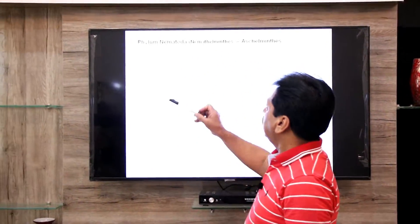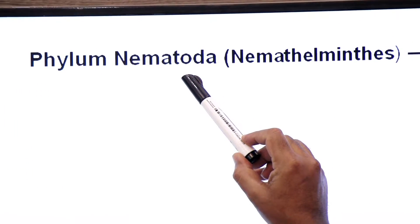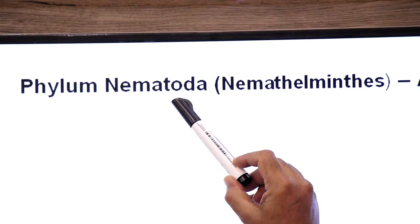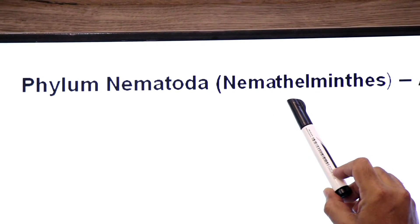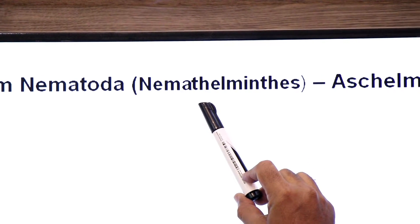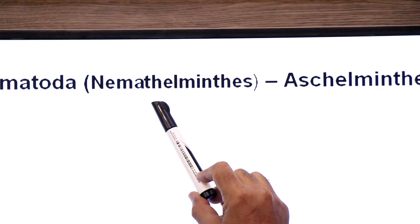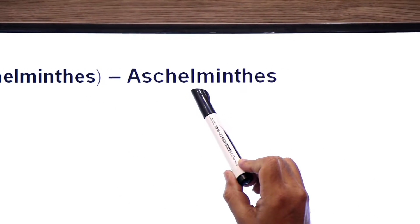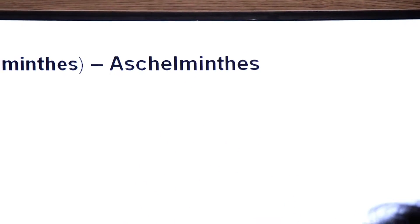Hello dear students, welcome back. We are discussing Chapter 10, Kingdom Animalia. We have already discussed three phyla of animal kingdom. Today we are going to discuss another phylum: Phylum Nematoda. This phylum is also known as Nimithelmenthes and also known as Ascalminthes.